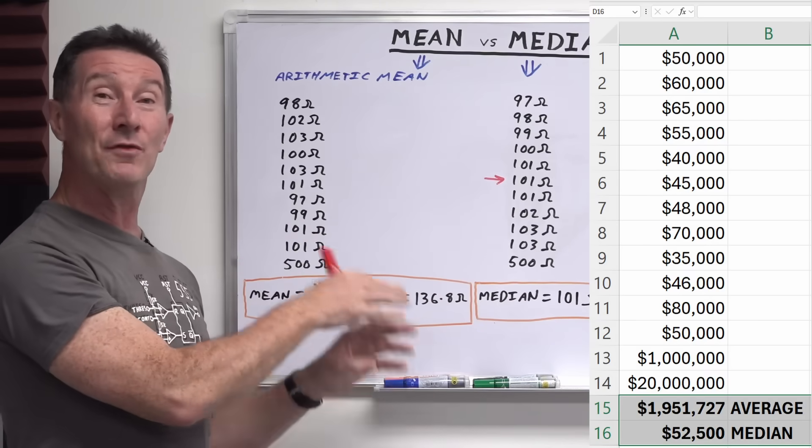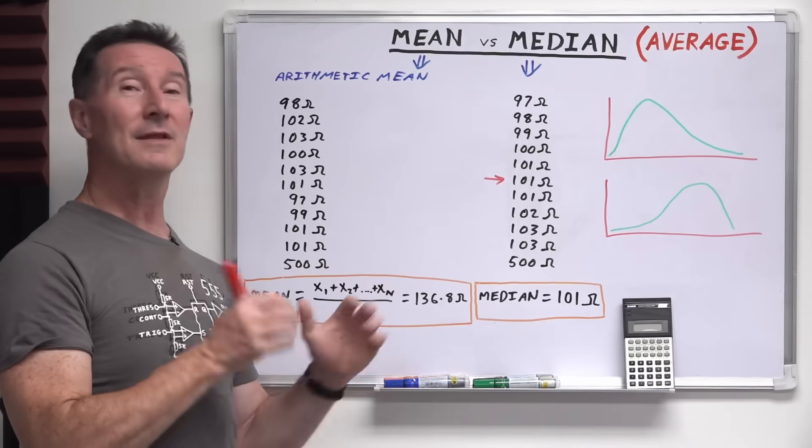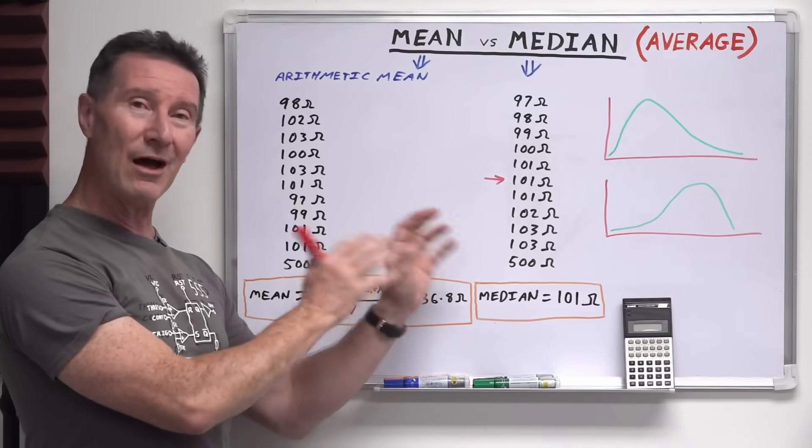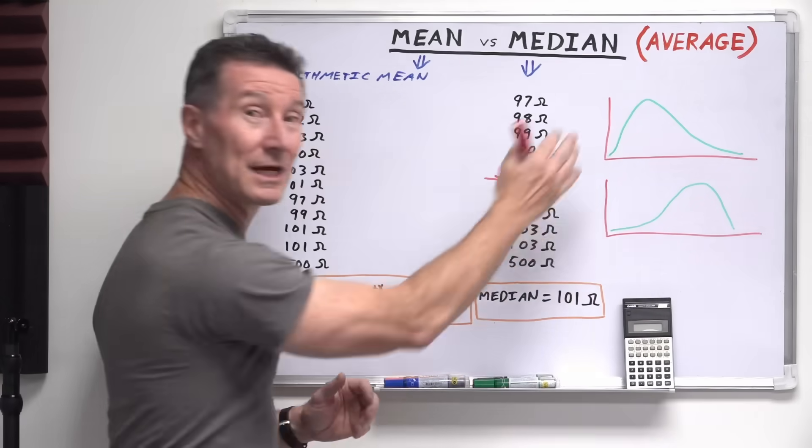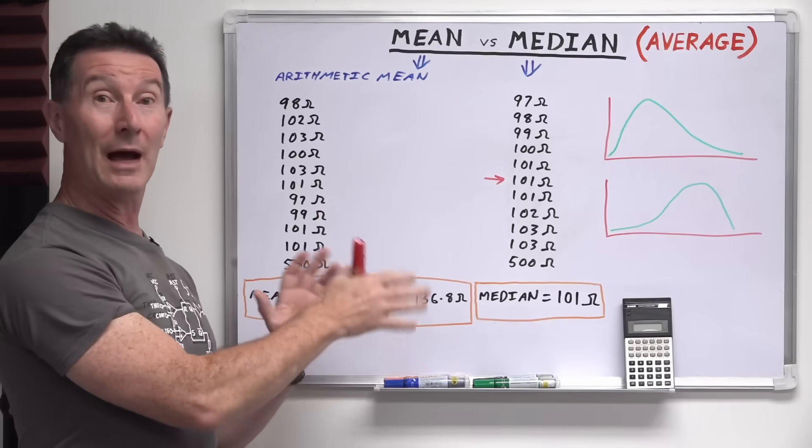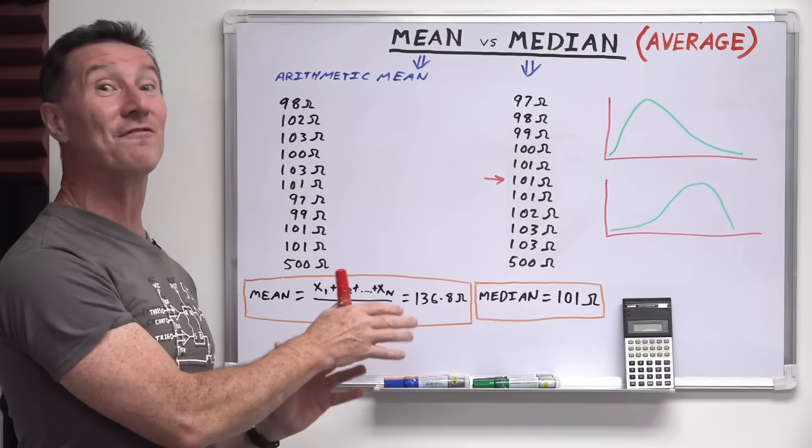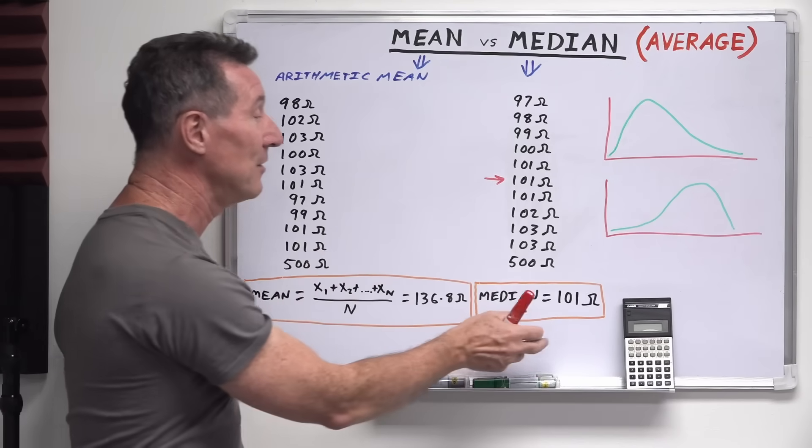Richie riches out there in the world that can actually skew the data. And there can be a ton of other examples where outlying data or skewed data will give you a substantially different result if you use the mean versus the median.